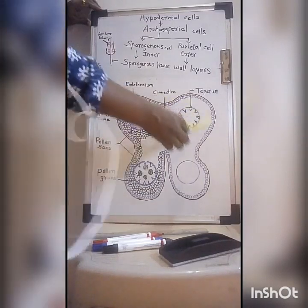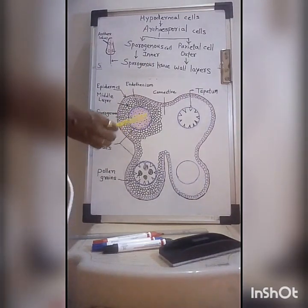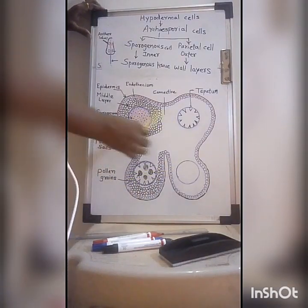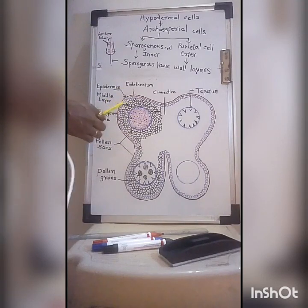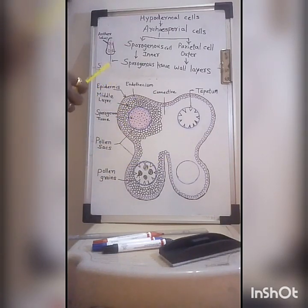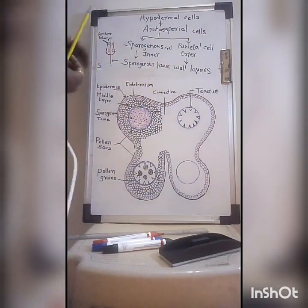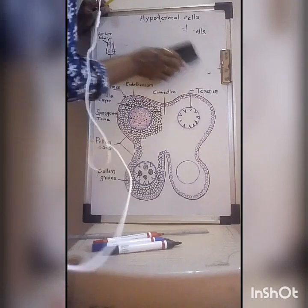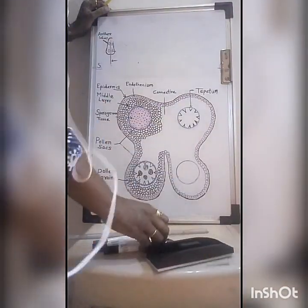If you carefully look at this diagram, the sporogenous tissue is present in all the pollen sacs. Now, the first thing we will look at is the wall layers of the anther — how many wall layers are present, where they are present, and how many layers of cells are in each wall layer. In all, there are four wall layers of the anther.